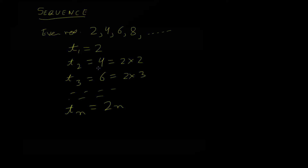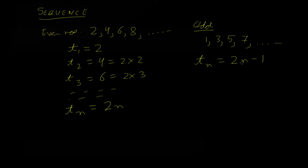Similarly, for odd numbers we have 1, 3, 5, 7, and so on. If you think about it, the general term can be written as tn = 2n − 1. Starting with n=1: 2(1)−1 = 1; n=2: 2(2)−1 = 3; n=3: 2(3)−1 = 5, and so on. This is how we write a general term for a sequence.